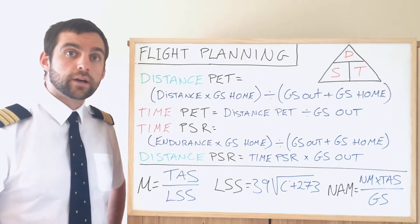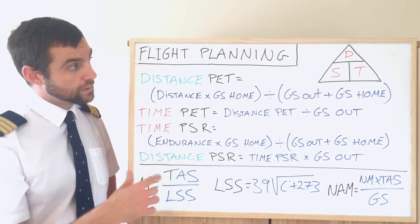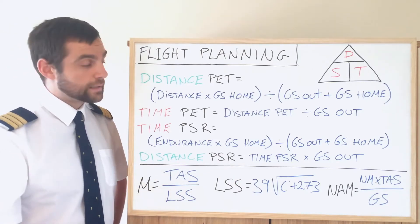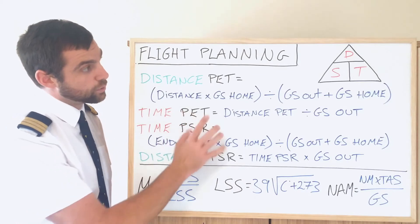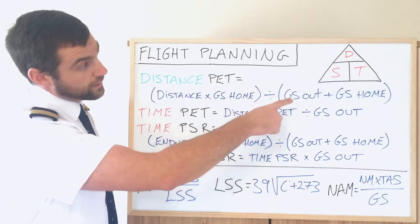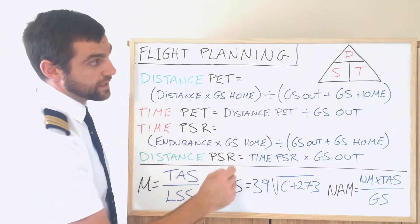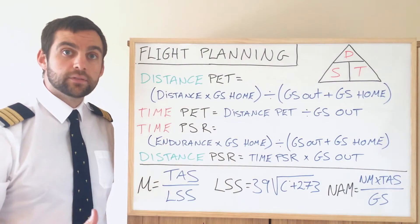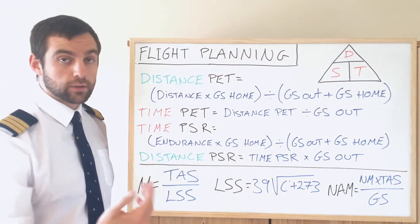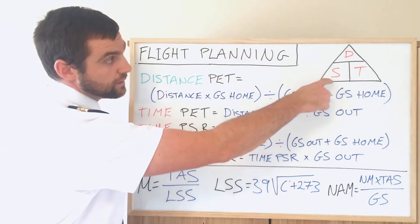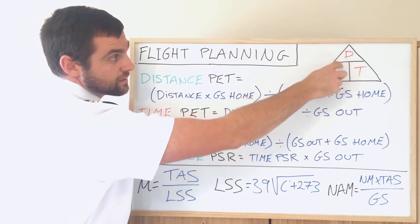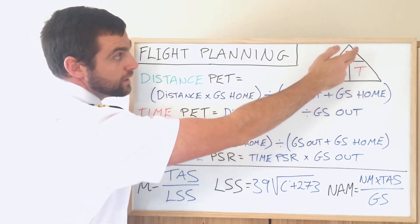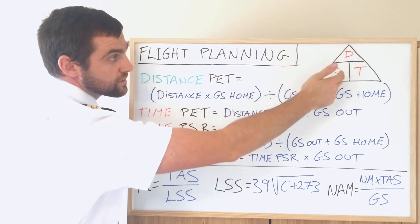The speed-distance-time triangle is very important to know, including the equations at the bottom which I'll talk about later. The triangle has distance, speed, and time — all you have to do is depending on which figure you have, place them into the triangle to find the equation. Speed equals distance over time, distance equals speed times time, and time equals distance over speed.